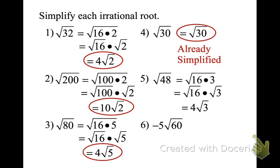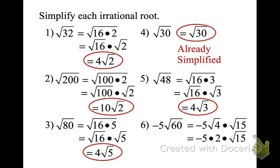Number 6: negative 5 — notice it's next to the radical, which means multiplication. So it's -5 times √60. I can do 4 and 15: so -5 times √4 times √15. √4 becomes 2, so it's negative 5 times 2 times √15, which makes -10√15.